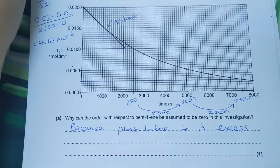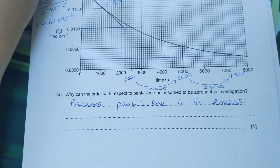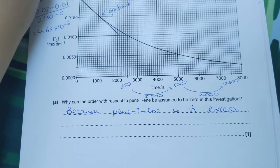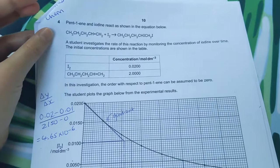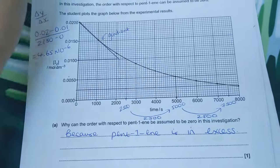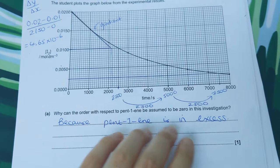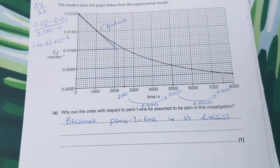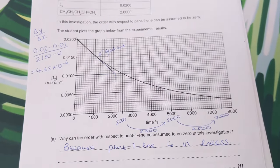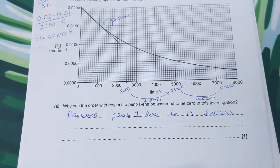This question involves a reaction between pentene and iodine. It asks why the order with respect to pent-1-ene can be assumed to be zero. When asked a question like that, it's nearly always because that substance is in excess. Anything in excess doesn't really affect the rate of reaction, and something that doesn't affect the rate sounds like zero order.